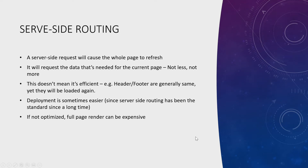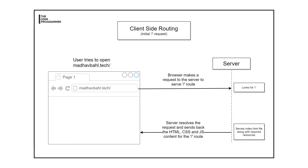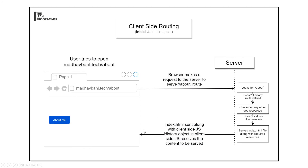Now let's look at client-side routing. With the server-side explanation, you can probably already guess what it is. Again the user goes to madhavbehel.tech, the browser makes a request to the server for the initial route, and the server finds a definition and serves the index.html file along with the required resources. It returns the HTML, CSS, and JavaScript and shows it on screen. But what happens for other routes? If the user tries to open madhavbehel.tech/portfolio or /about, the browser makes a request to the server for /about. The server looks for /about but does not find any defined route.